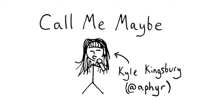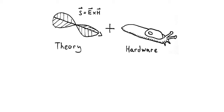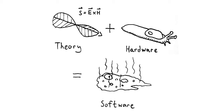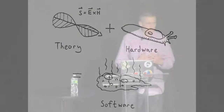This particular talk is actually going to be about the intersection of computer science theory — sort of this beautiful mathematics and these nice proofs about systems properties — and what happens when you try to put those into practice in a real system. A lot of times when you combine theory and hardware, you get something messy. And that software tends to fail in interesting ways at the boundaries of systems.